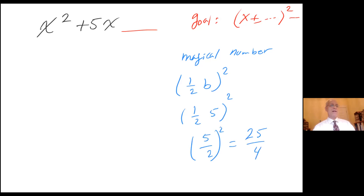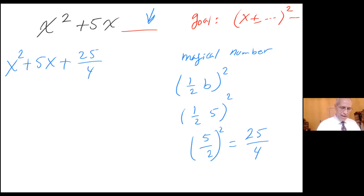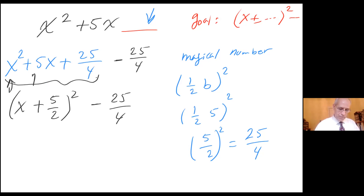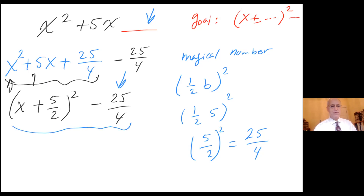So 25 over 4 is the magical number that I need. Let me rewrite this as x squared plus 5x plus 25 over 4, and I'm going to balance that with minus 25 over 4, because I'm not changing the value of the original expression. Now using the first three terms, I get x plus half of b — that's plus 5 halves — quantity squared, and then minus 25 over 4. You're welcome to expand it and prove to yourself that we didn't change anything.